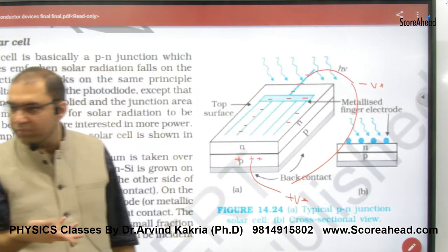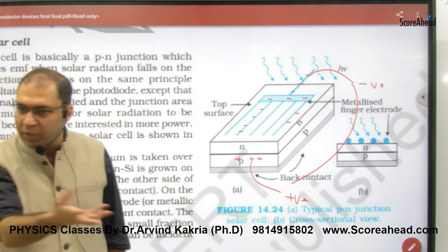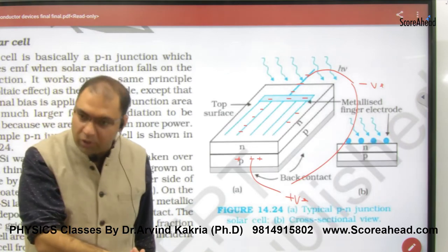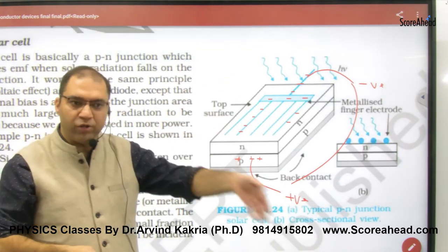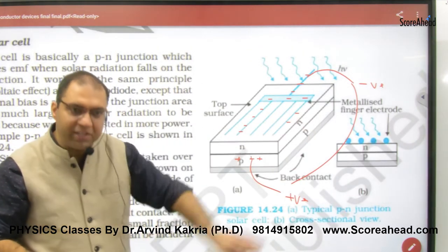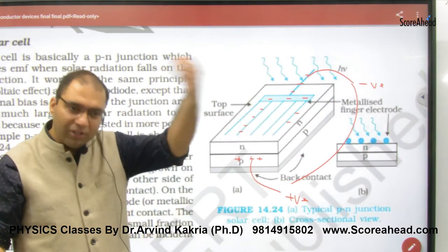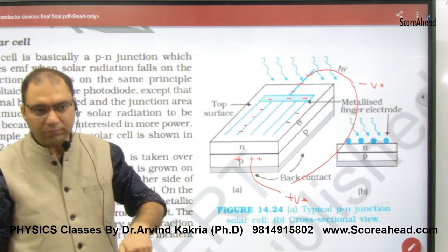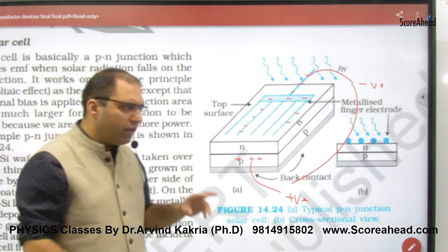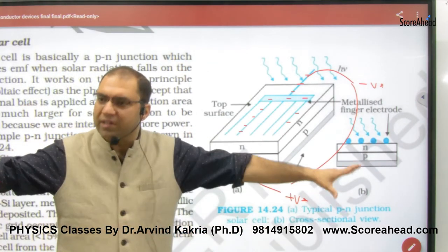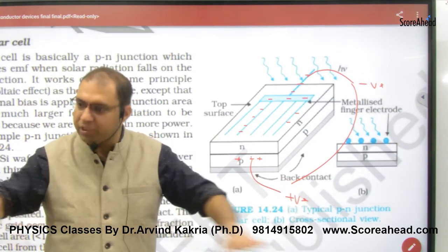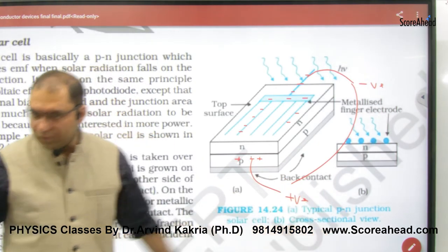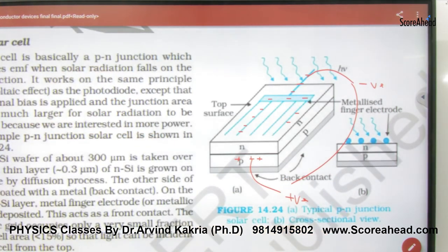If you connect a bulb or complete the circuit, current flows from negative to positive. So electricity is generated from light. Millions of solar cells together form a solar panel. The electrons keep moving, generating a continuous current. This is the working principle of the solar cell and solar panel.